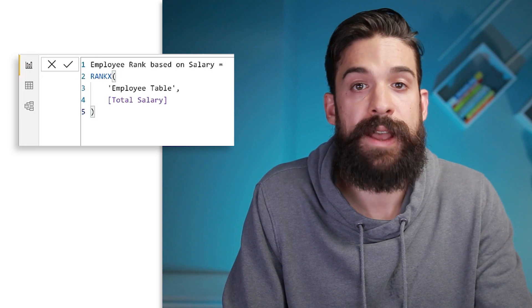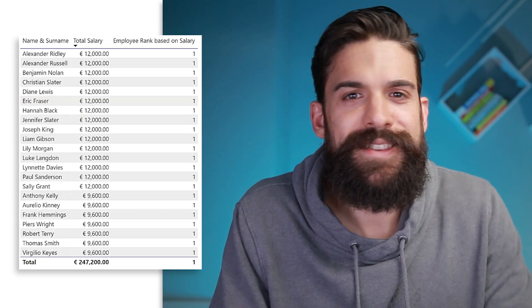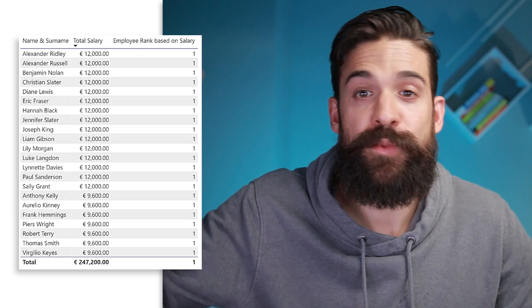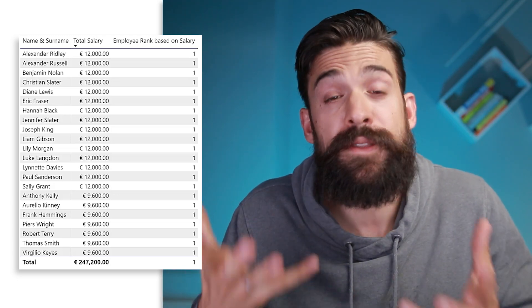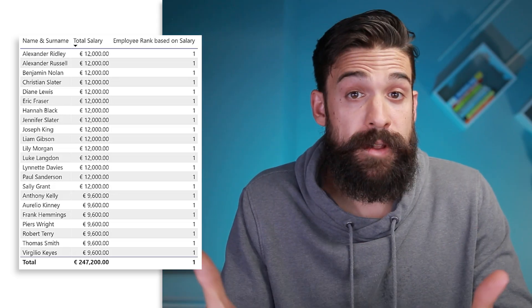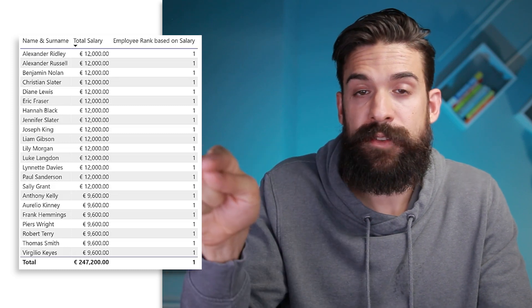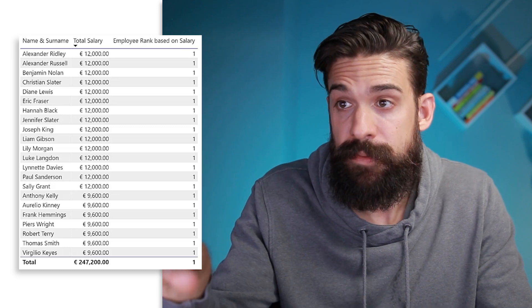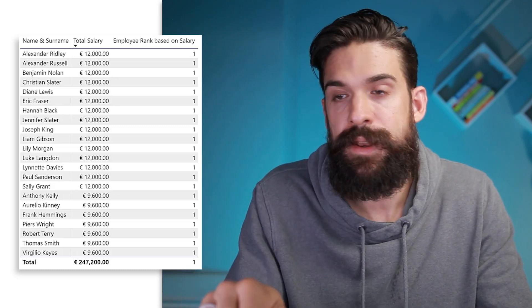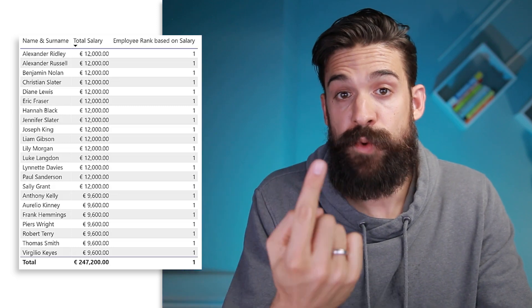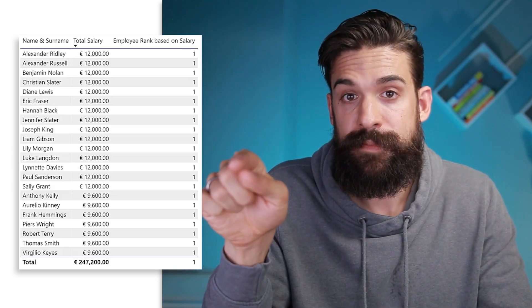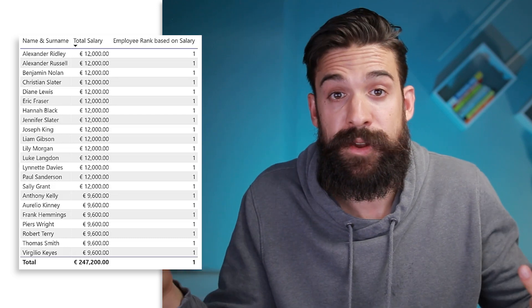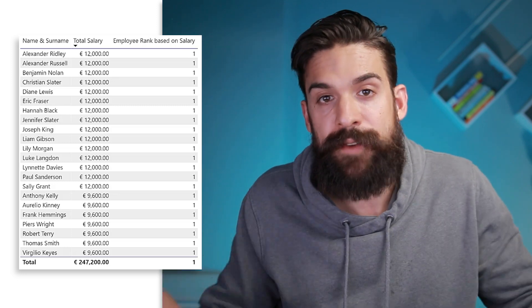Now let's close the RANKX function and see if it works. The measure doesn't work — it returns a 1 for every single employee. This is often the first problem people run into with RANKX. The problem is that RANKX iterates all rows within the filter context. The filter context in this visual is determined by employee name, so for each employee there's only one row. It iterates over one row, calculates the total salary, and ranks it — but because there's only one employee, it returns 1 everywhere.